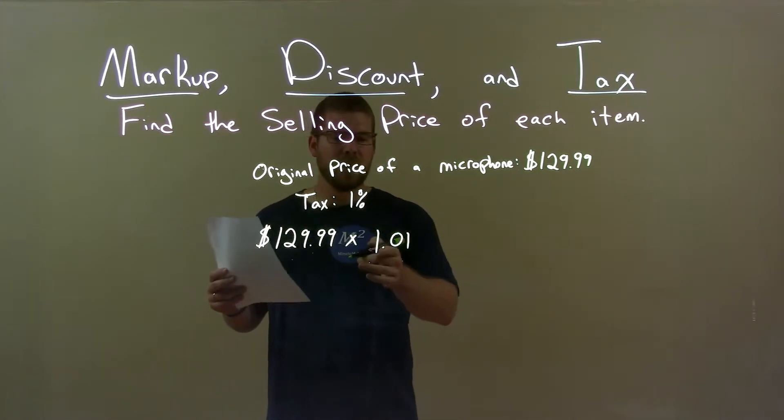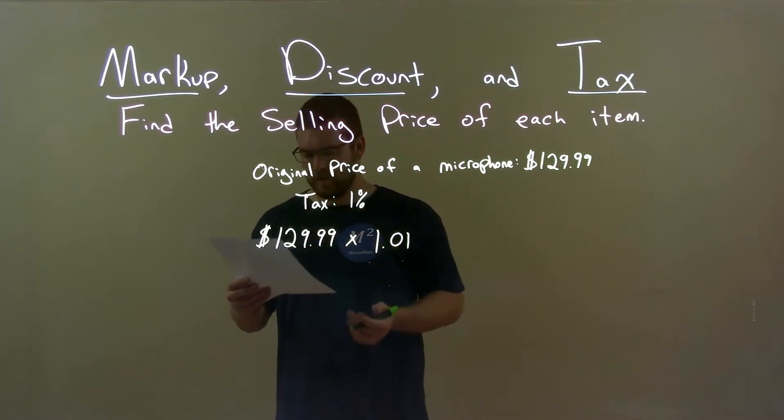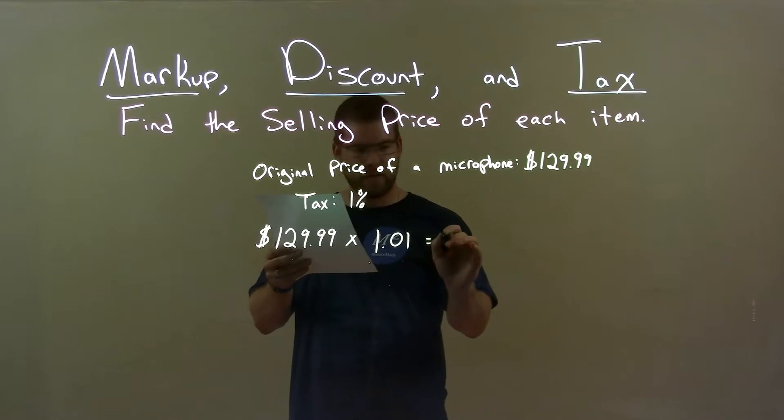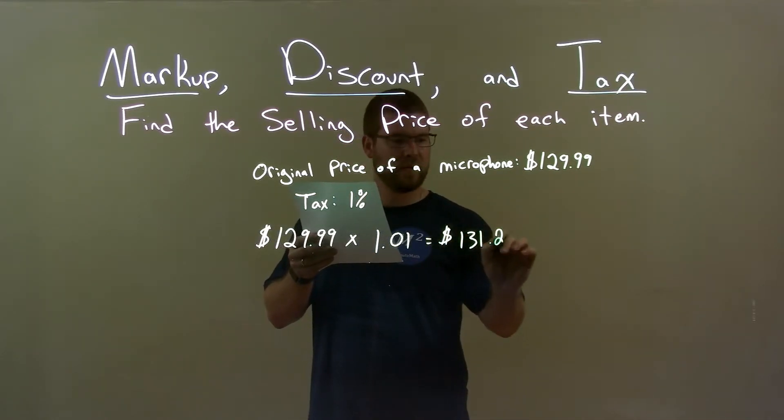0.01 represents the 1%, and the 1 represents just the original price as well. So, that gives us a final after-tax price of $131.29.